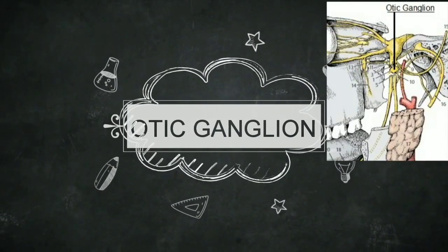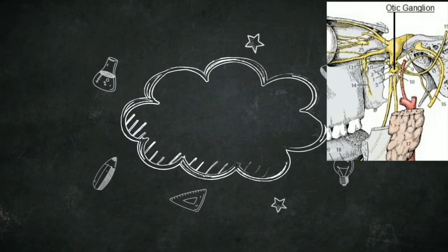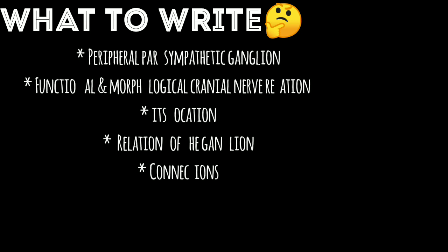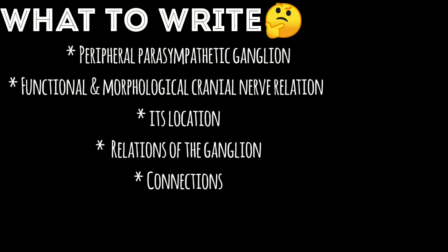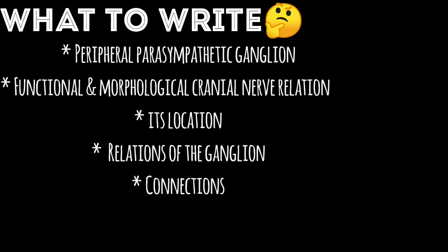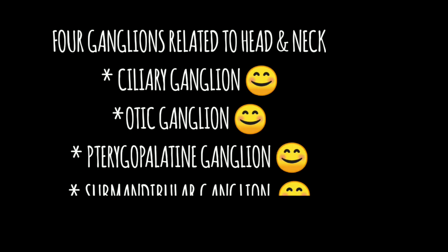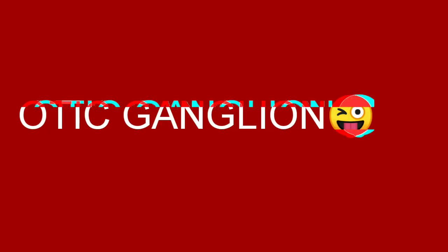Start with a new topic: the otic ganglion. Ganglion means a collection of cell bodies in the peripheral nervous system. When a ganglion related to head and neck is asked, please mention the following things: peripheral parasympathetic ganglion, functional and morphological cranial nerve relation, its location, relations, and connections. The 4 parasympathetic ganglia related to head and neck are ciliary, otic, pterygopalatine, and submandibular.